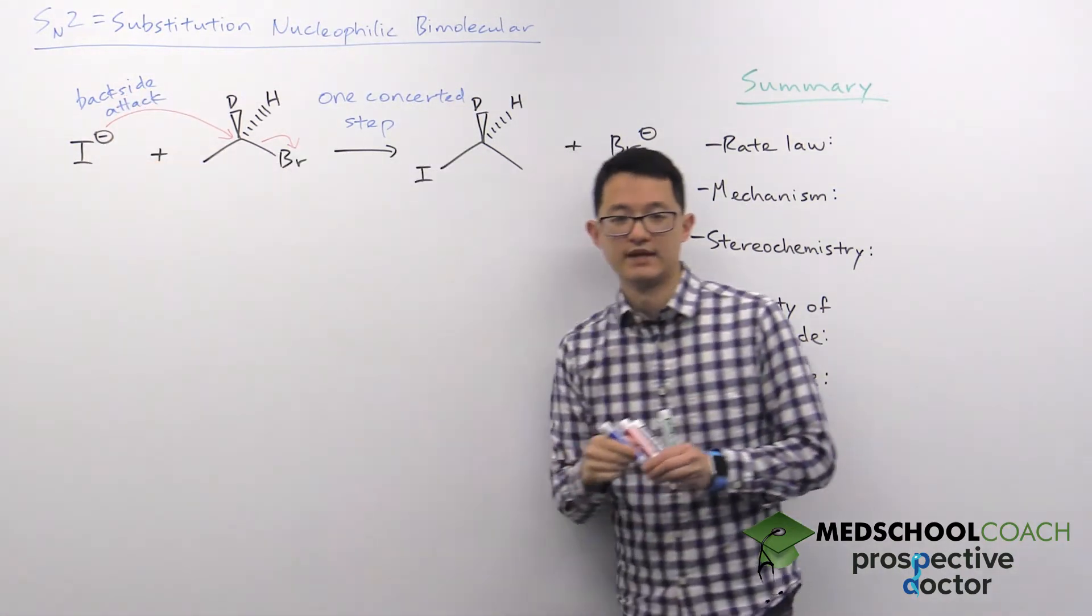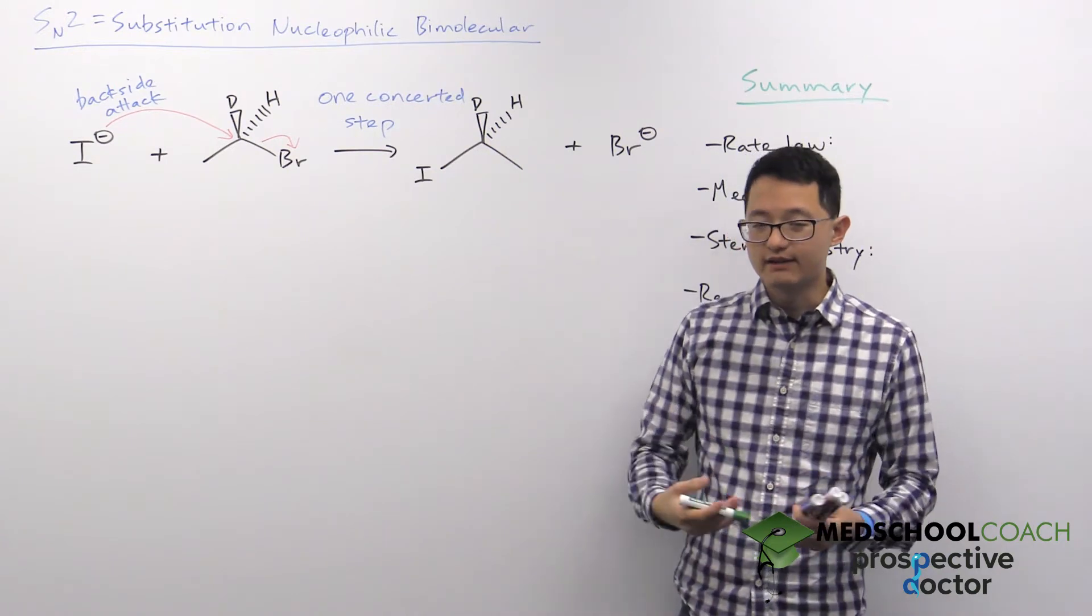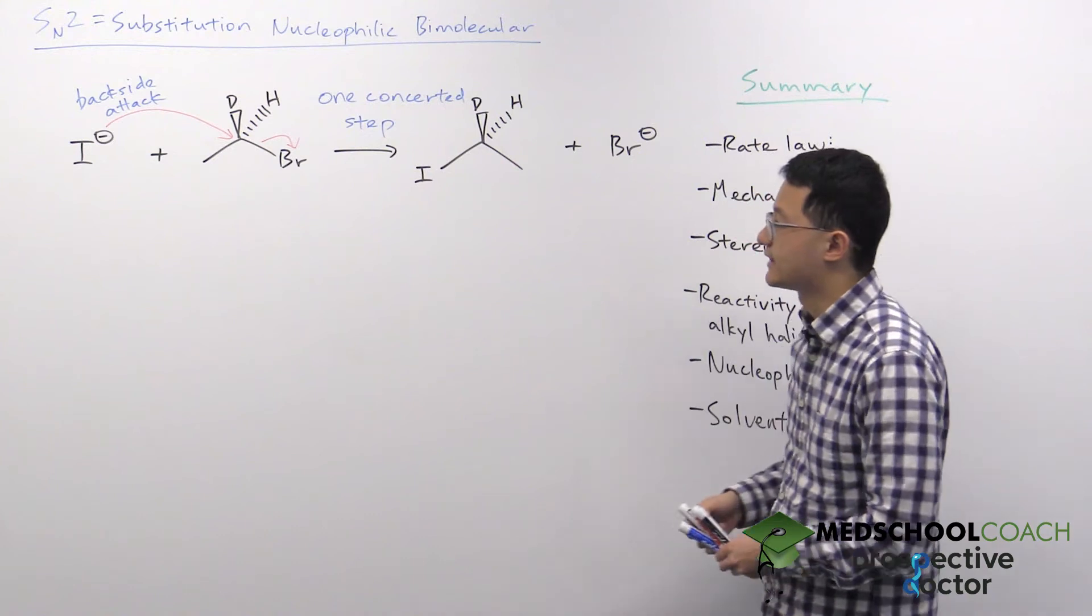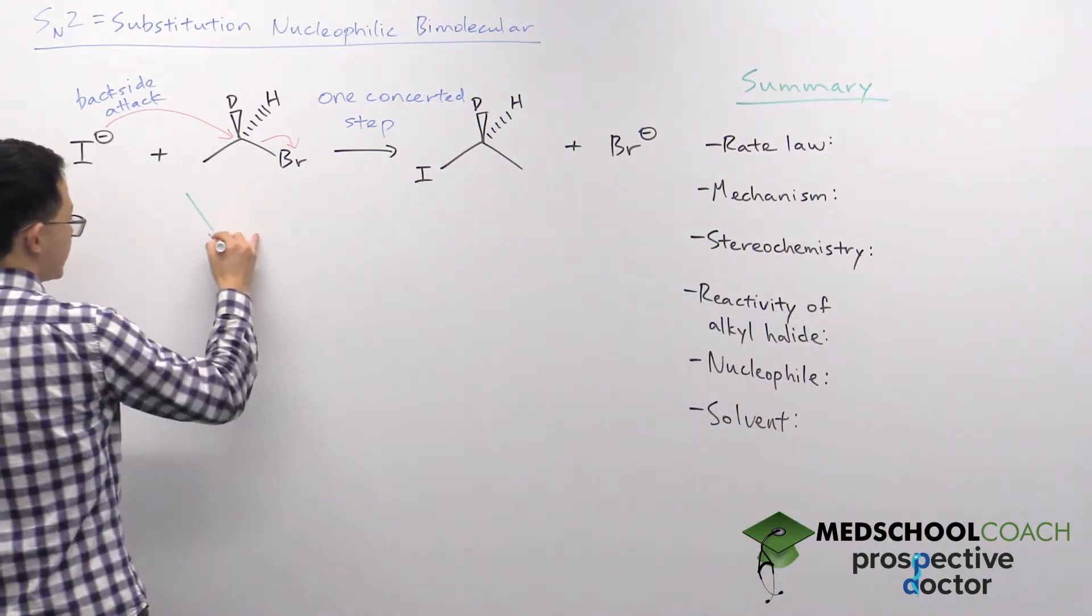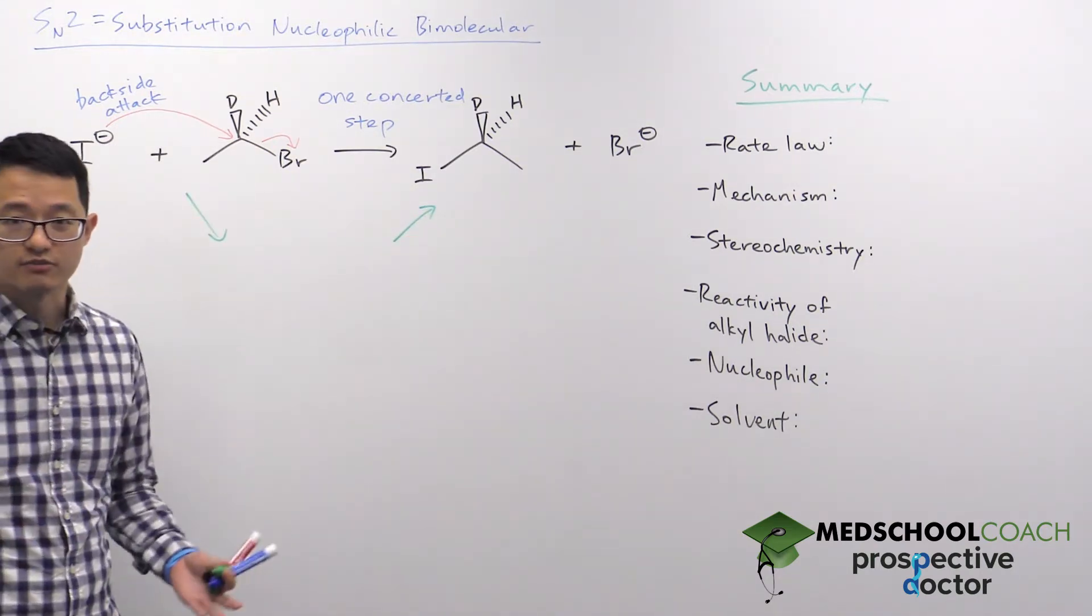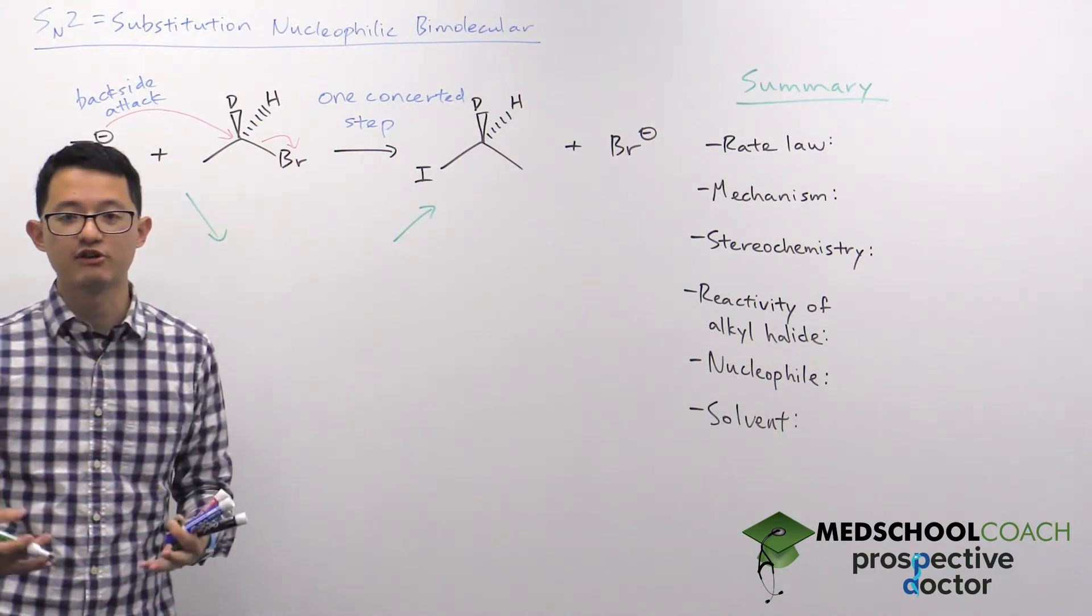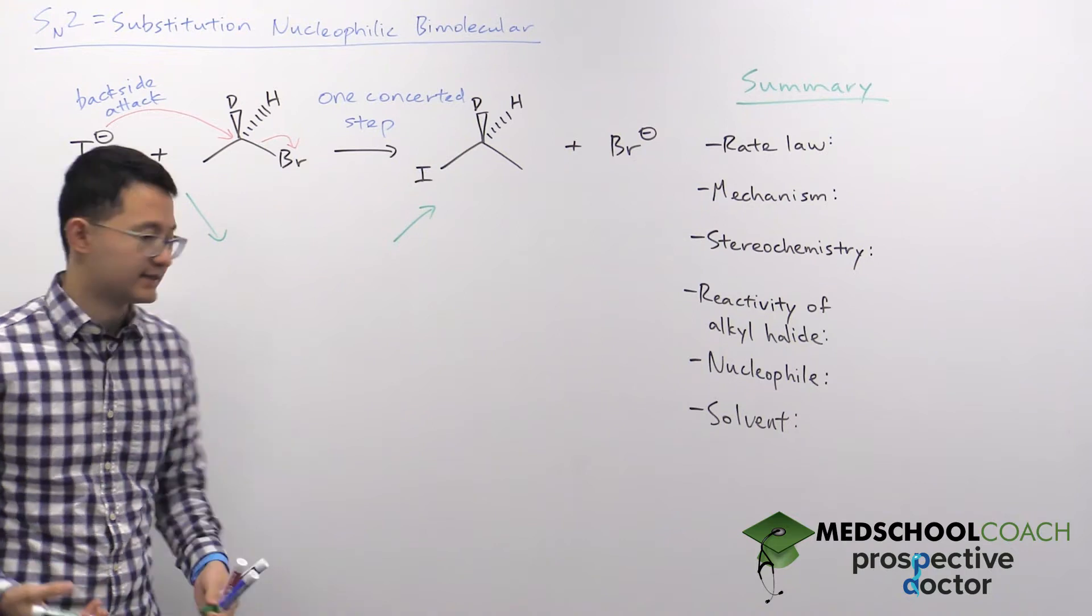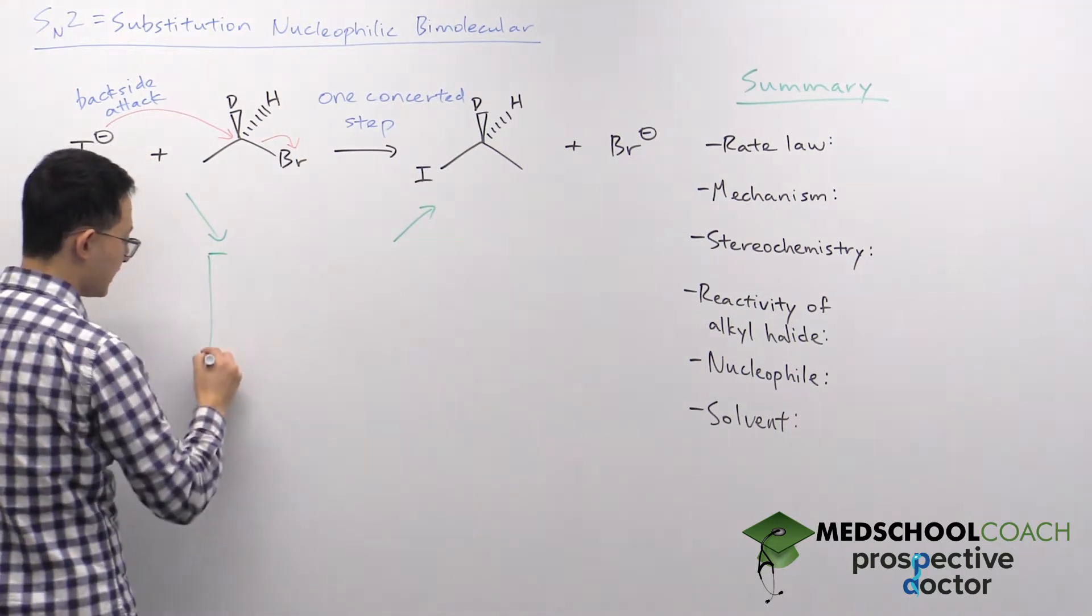All right. So even though this reaction takes place in one step, we can take a look at the details of the mechanism by looking at the transition state. Let's go ahead and draw the transition state right here. Remember the transition state is not an actual molecule. It's just showing what is that high-energy transient state during this one-step reaction.